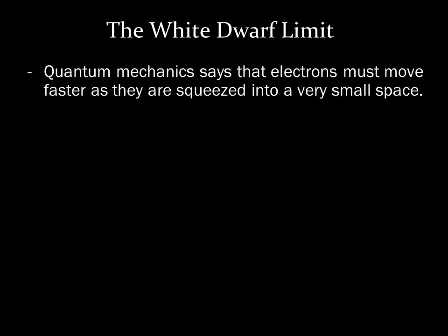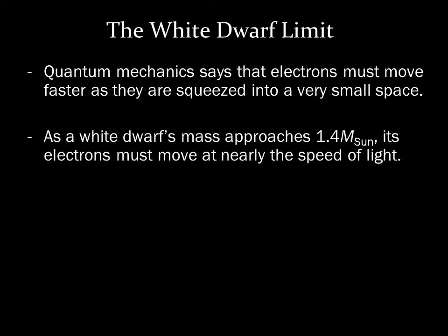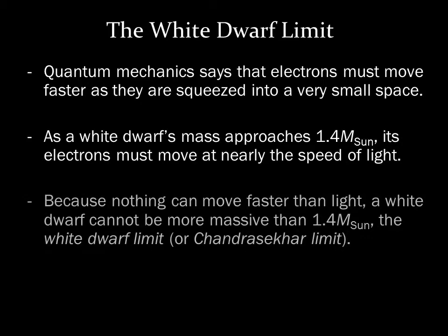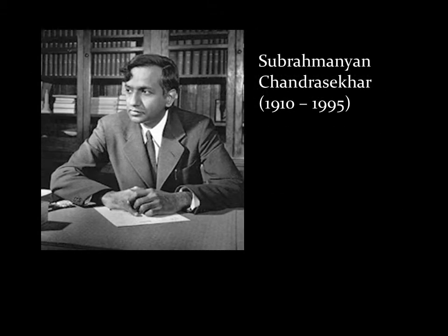Electrons inside a white dwarf are moving incredibly fast. The more massive the white dwarf, the faster the electrons move. But there is a limit to their speed. Theoretical calculations show that electron speeds would reach the speed of light in a white dwarf with a mass of about 1.4 solar masses. Because nothing can travel faster than the speed of light, no white dwarf can have a mass greater than 1.4 solar masses. This mass is known as the white dwarf limit, also known as the Chandrasekhar limit, after the scientist who first calculated it.